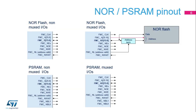The Flexible Memory Controller supports non-multiplexed and multiplexed PSRAM and NOR interfaces. The non-multiplexed interface has separate address and data signals. The multiplexed interface drives the 16 address LSBs on the same pins as the 16-bit data, so an external address latch is required to maintain the lower part of the address while data is transferred. This latch is embedded in SOMNOR and PSRAM devices.